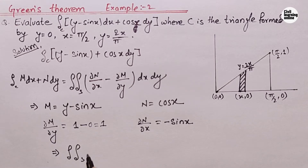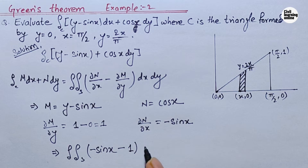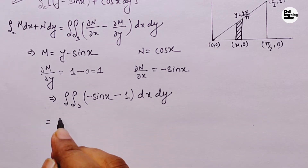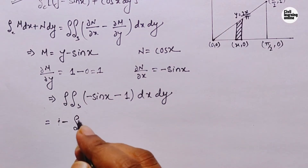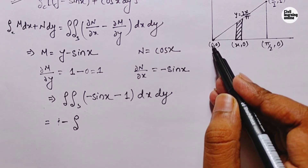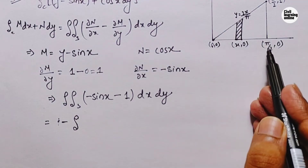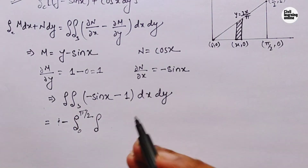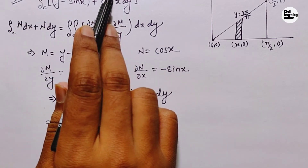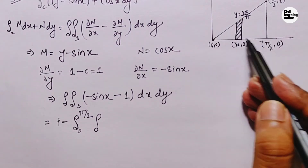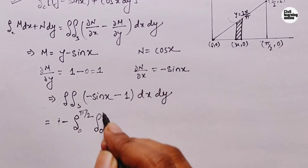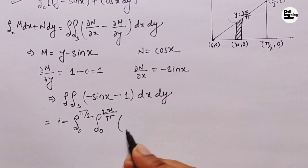Substituting into Green's theorem, we get the double integral of (∂N/∂x minus ∂M/∂y) dx dy, which becomes the double integral of (minus sin x minus 1) dx dy. Taking minus sign common, we get minus the double integral of (1 plus sin x) dx dy. The limit of x is from 0 to pi by 2, and the limit of y is from 0 to 2x upon pi.